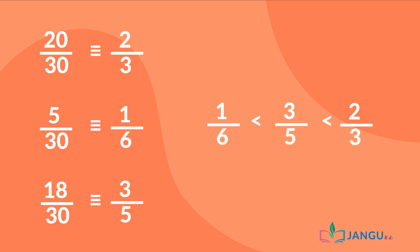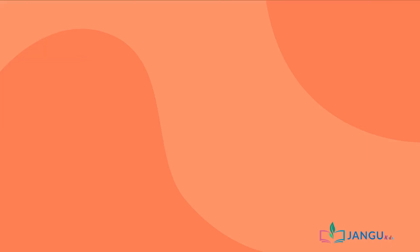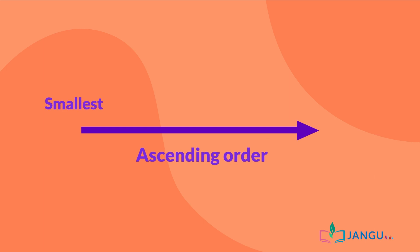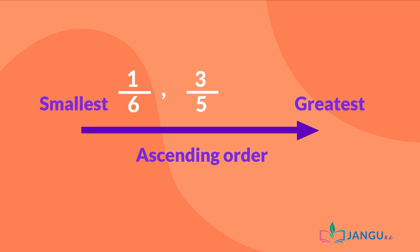Looking at the equivalent fractions, we can see that 1 over 6 is less than 3 over 5, and 3 over 5 is less than 2 over 3. Therefore, in ascending order, we have 1 over 6, followed by 3 over 5, and then 2 over 3.